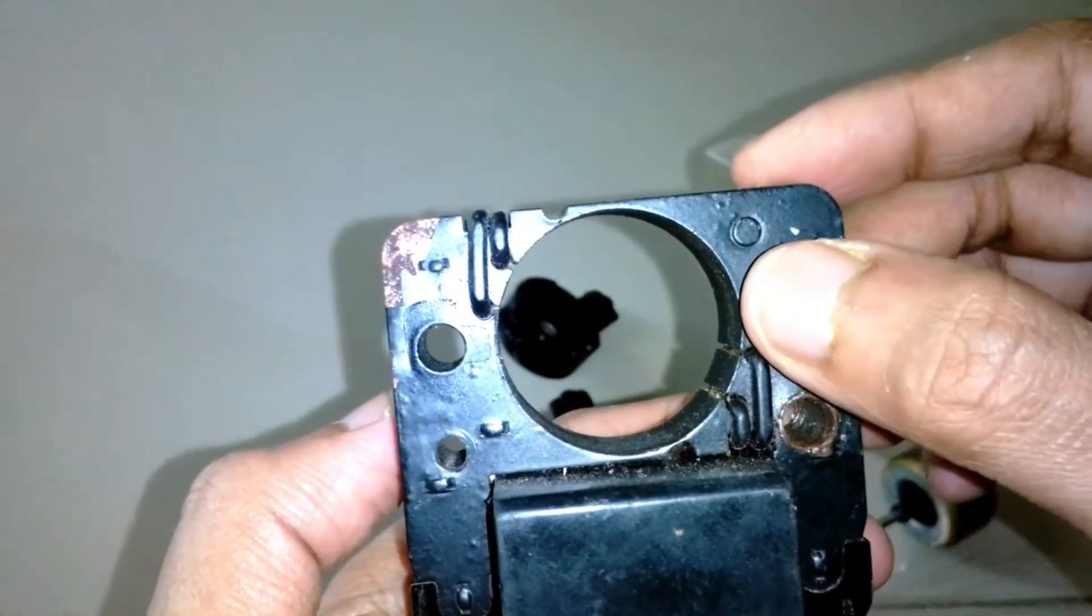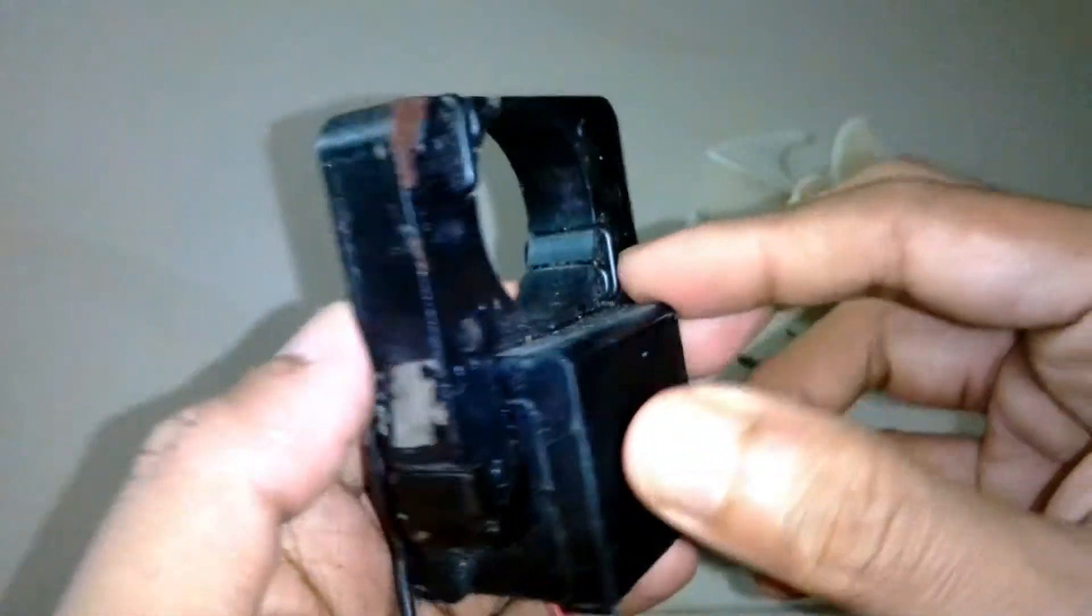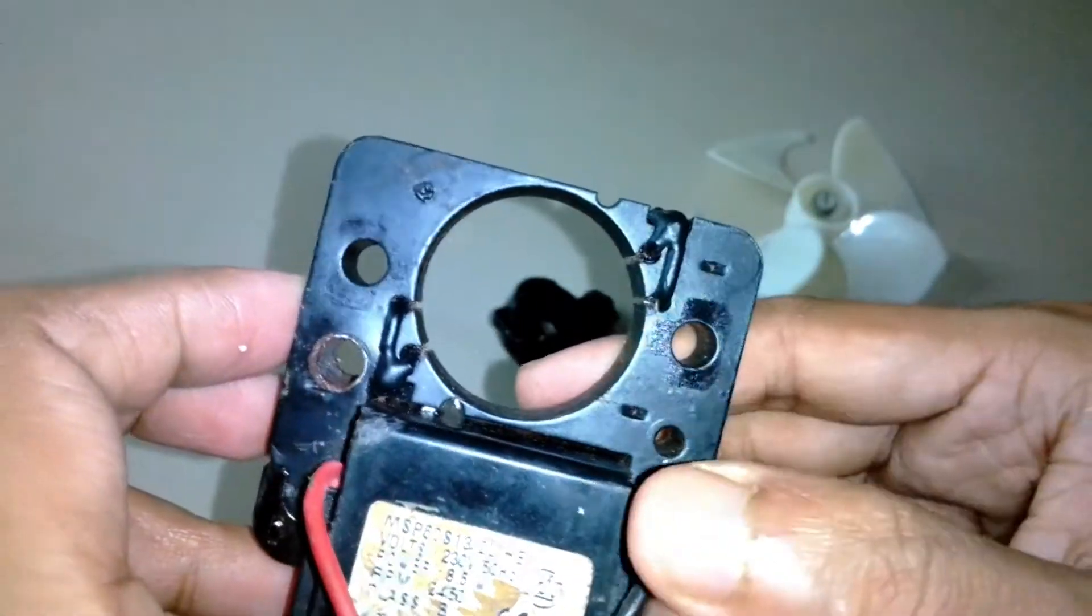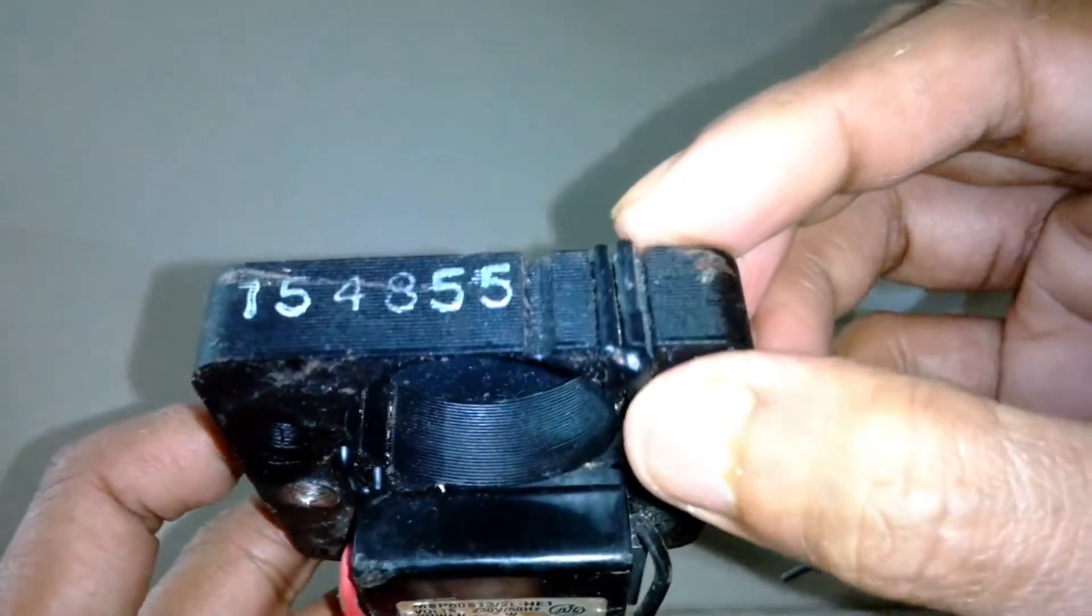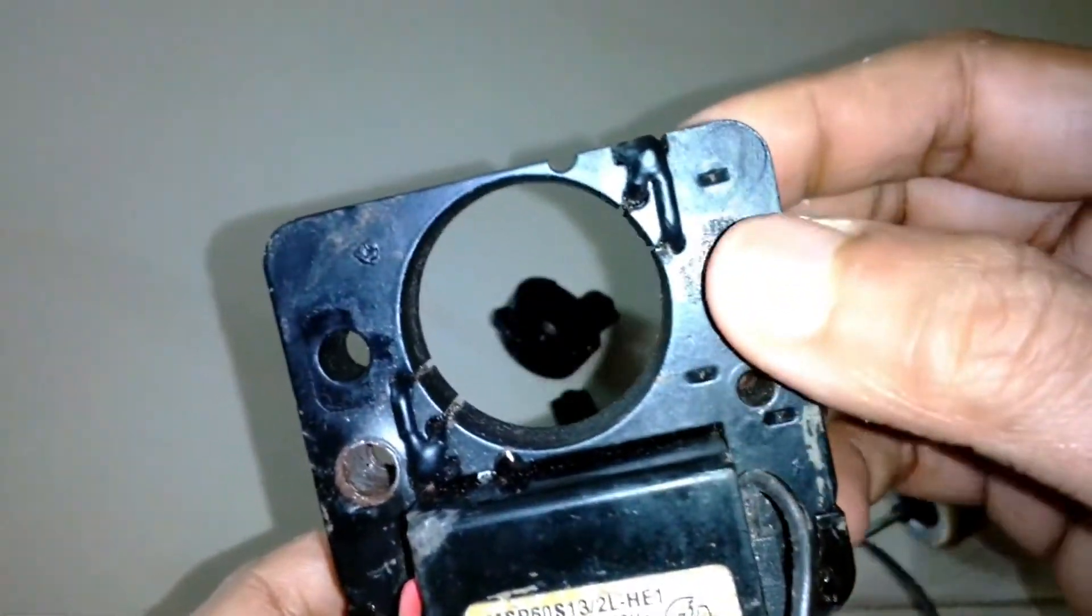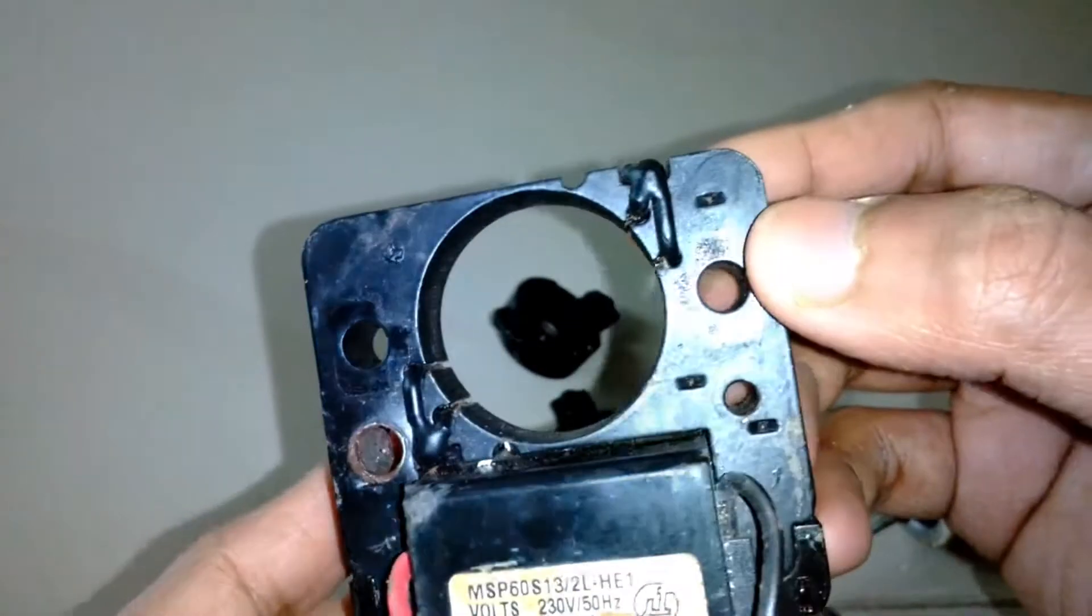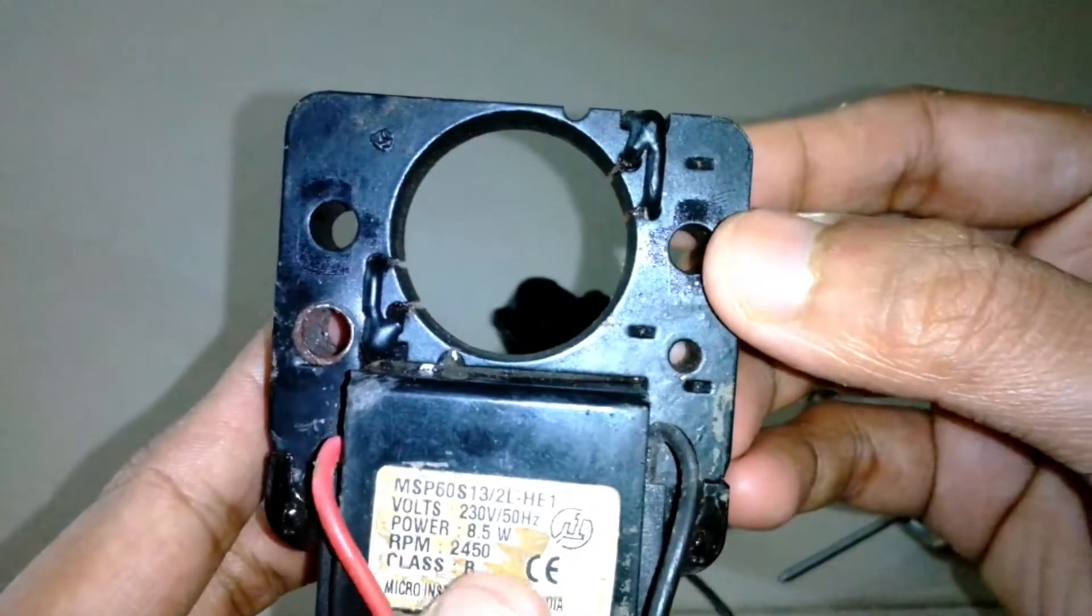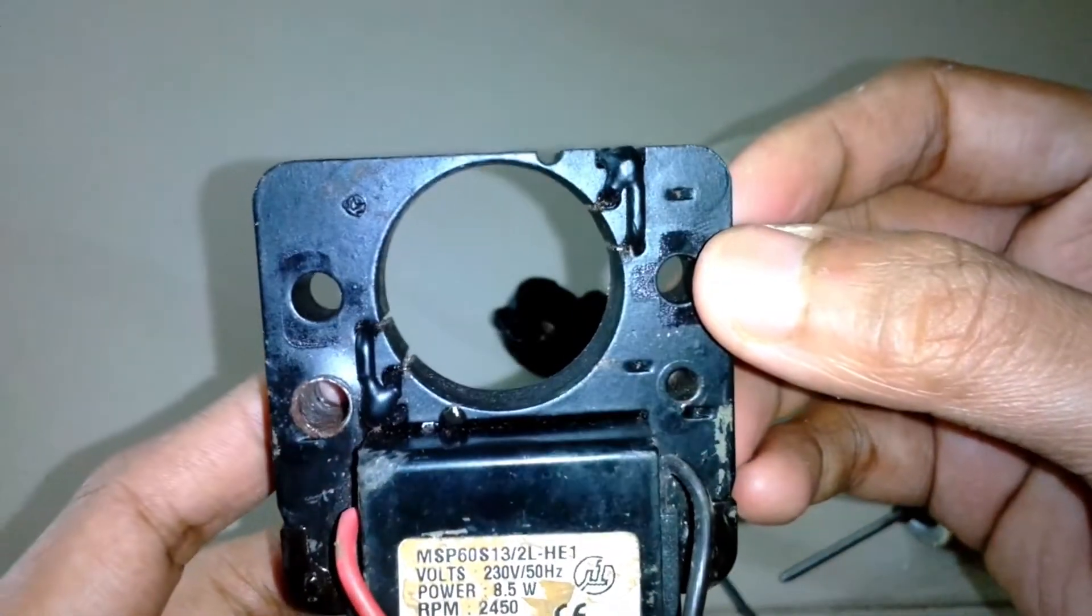As the magnetic field changes direction alternatively, these rings actually absorb some of the energy and redirect the magnetic field in such a way that the motor starts itself. Due to these rings, you cannot run the motor in reverse direction. That's one of the demerits.